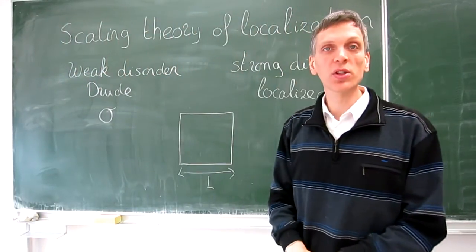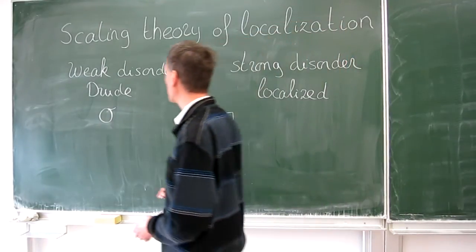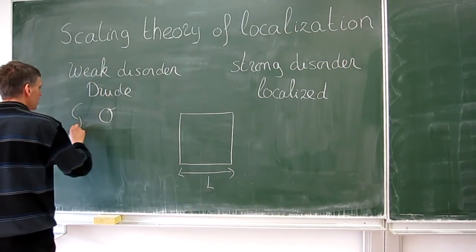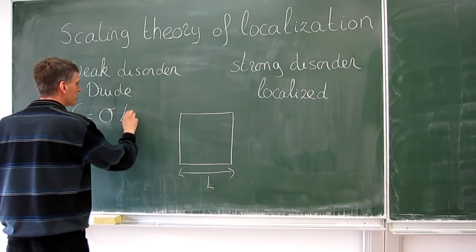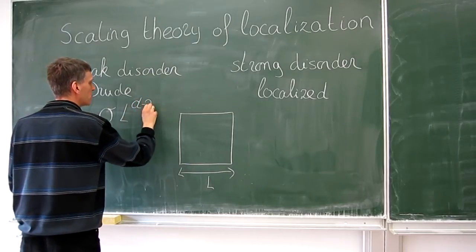In the Drude theory, conductivity and conductance are related as conductance g is sigma times L to the power d minus 2.